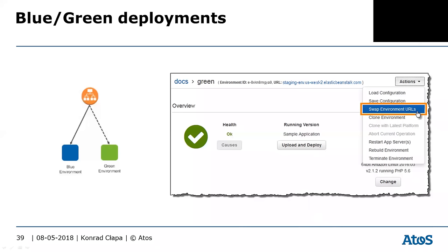It's actually very simple — you upload your application using either zip or WAR, import it to the desired location, test your application, and once tested you can go to Beanstalk and swap the environments or URLs. This moves the URL from the old environment to the new one.